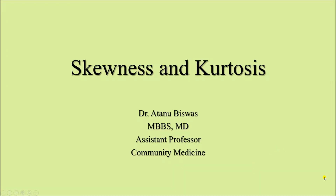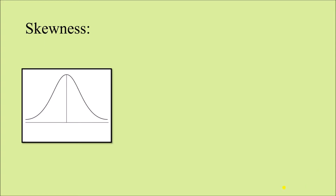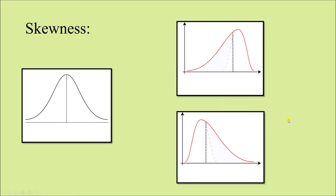Today we shall talk about skewness and kurtosis. First, skewness. In our previous video we learned about normal distribution and the normal curve. This is what a normal curve looks like — a bilaterally symmetrical, smooth, bell-shaped curve — and these narrow portions going towards the baseline are known as the tails. But if we draw a frequency curve using observations in a given dataset, we may not always get a normal curve; sometimes the curve may look different.